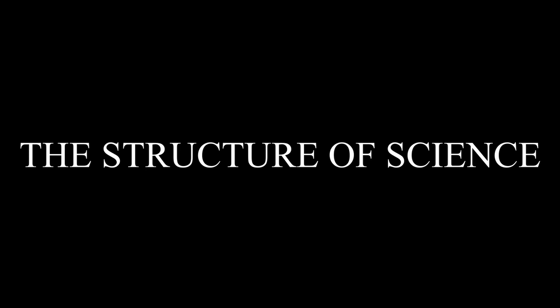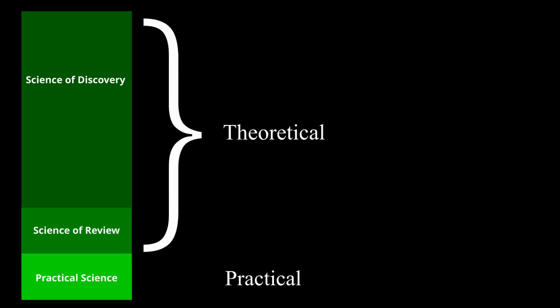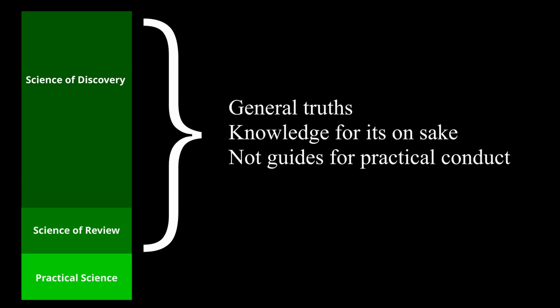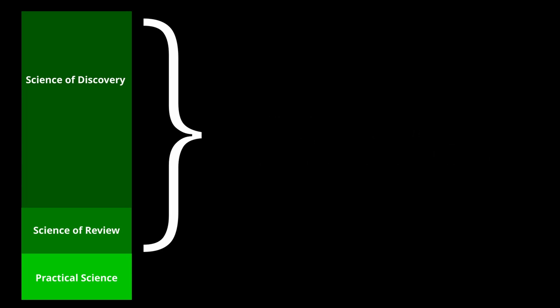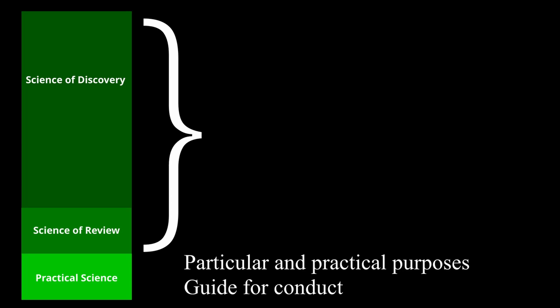This is a symbiotic process — it's not about which science is better than the other or which is more important. It just helps us to order the whole of human knowledge into the structure of science. The whole of human knowledge is first divided into the science of discovery, the science of review, and practical sciences. The first two are theoretical and interested in general truths, pursuing knowledge for its own sake, whereas practical science is aimed towards practical purposes and acts as a guide for conduct.